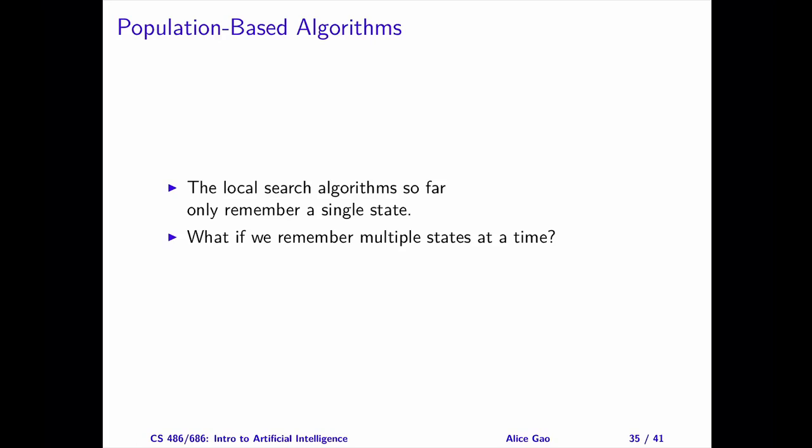So far, the local search algorithms only remember a single state at each time step. The advantage is that these algorithms require very little memory. The disadvantage is that they can only keep track of one state at a time. Perhaps, if an algorithm could remember multiple states, it would have a better chance at finding the best state among them. Let's explore an idea called population-based local search algorithms, where an algorithm remembers multiple states at each time step.